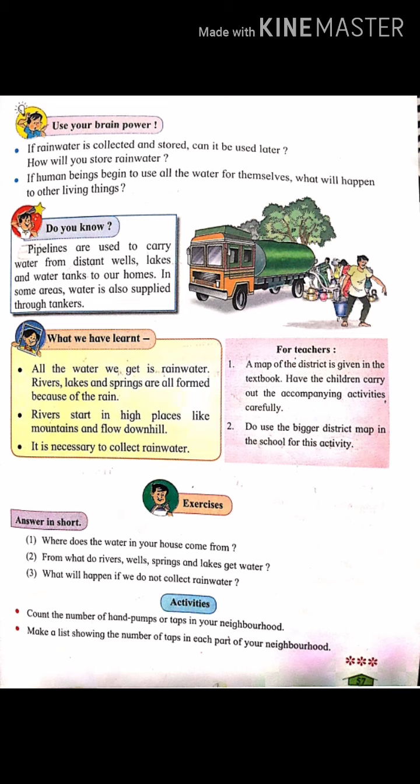This lesson on water teaches us we must use water carefully. What have we learnt, students? We have learnt that all the water we get is rain water. Rivers, lakes, and springs are all formed because of the rain. Rivers start in high places like mountains and flow downhill. It is necessary to collect rain water.